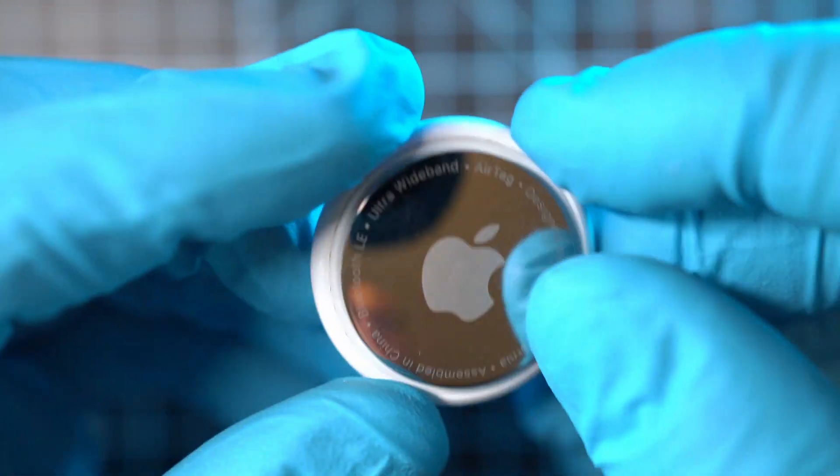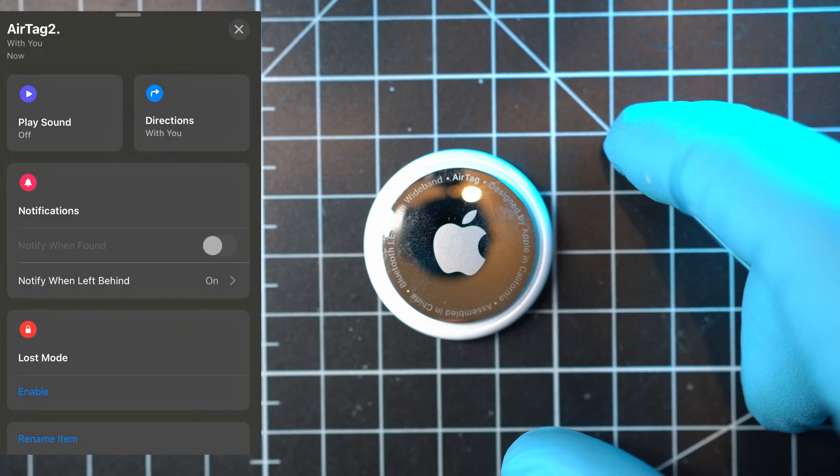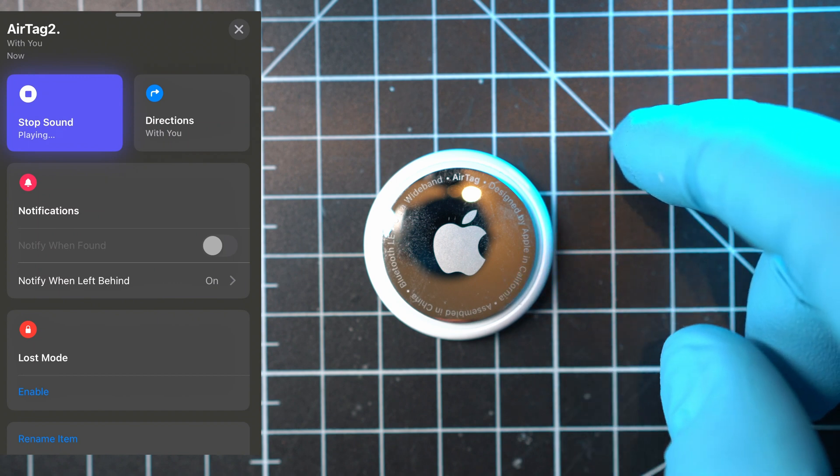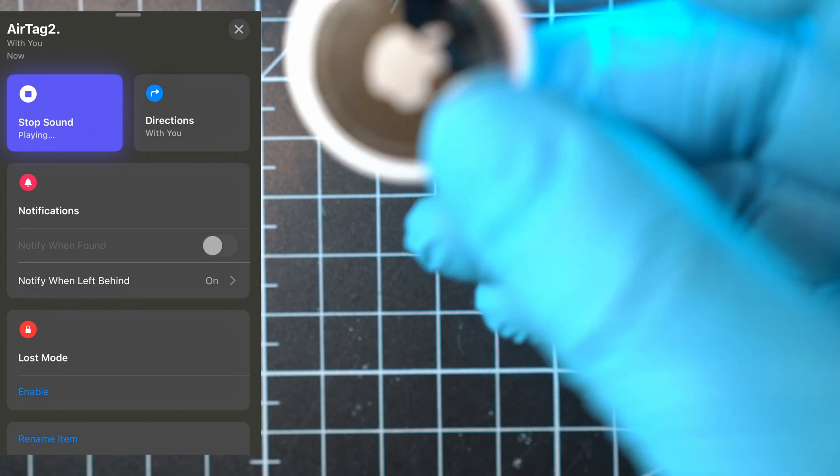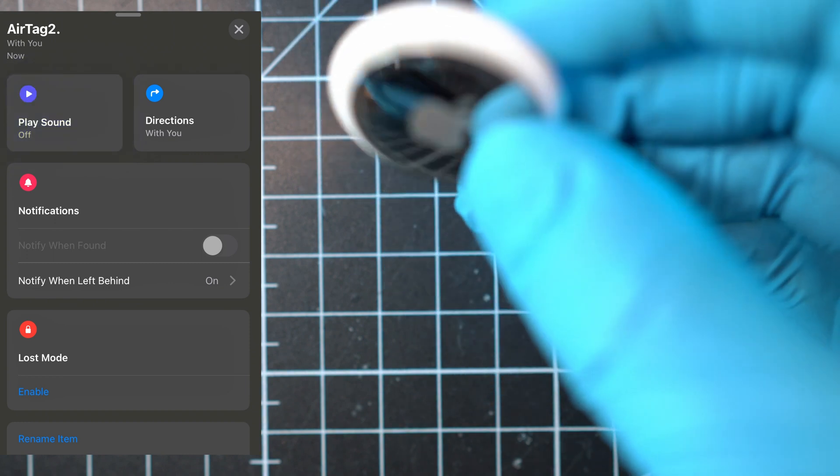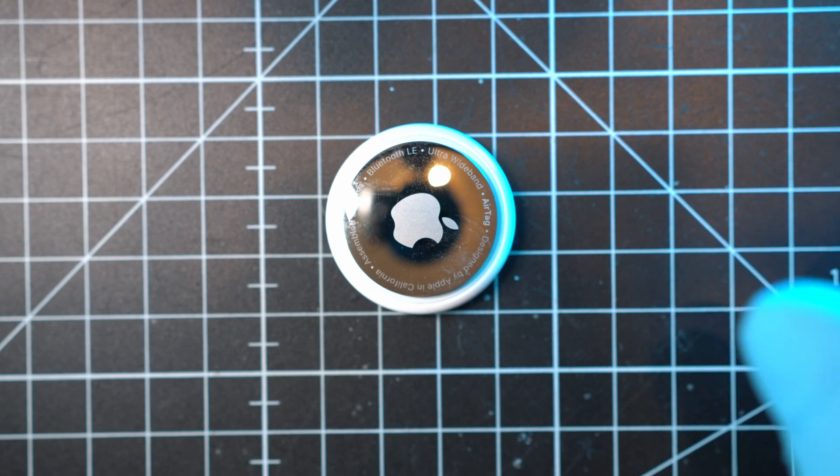This AirTag is modified to be completely without noises. The rest of the functions remain the same. Perfect for tracking your bike, car, bag, or even animals. Thanks for watching and see you next time.